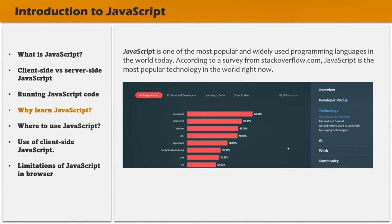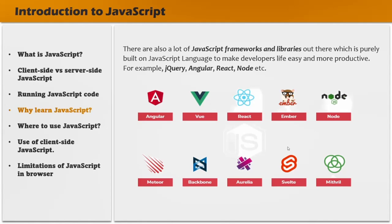JavaScript is one of the most popular and widely used programming languages in the world today. According to a survey from stackoverflow.com, JavaScript is the most popular technology in the world right now. Due to high demand, there is a huge opportunity, job growth, and high pay for those who know JavaScript. There are also a lot of JavaScript frameworks and libraries like Angular, React, and Node which are built on JavaScript to make developers' lives easier and more productive.